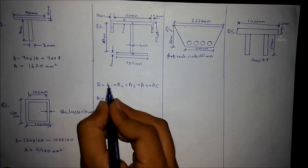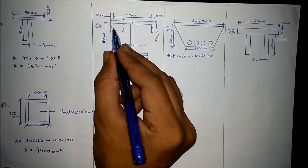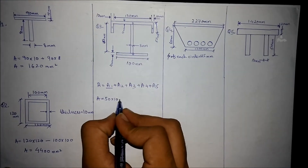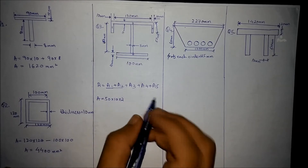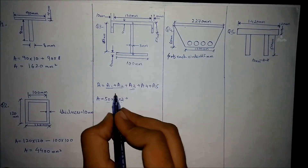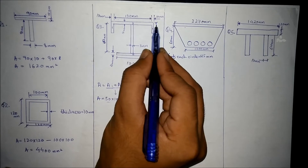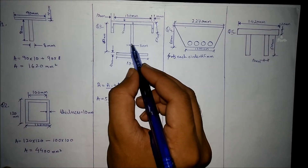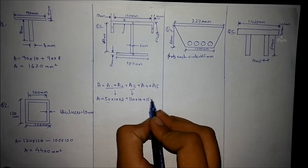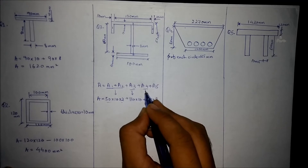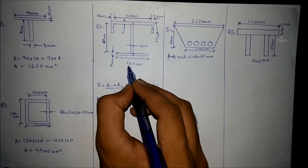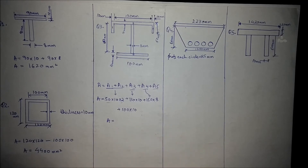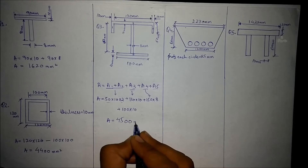Area 1 is 50mm × 10mm. Areas 1 and 2 are identical, so we multiply by 2. Area 3 is 130mm × 10mm. Area 4 is 150mm × 8mm thickness. Area 5 is 100mm × 10mm. The total area of this cross section comes out to be 4500 mm².